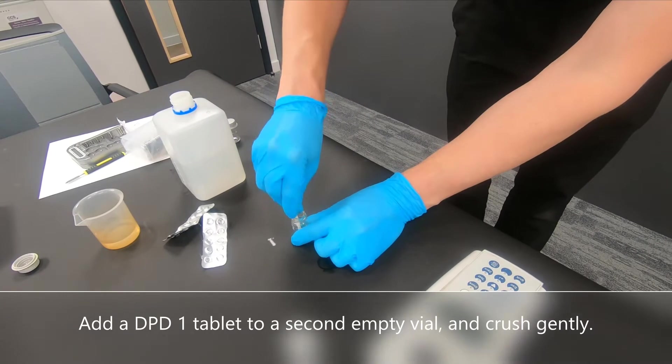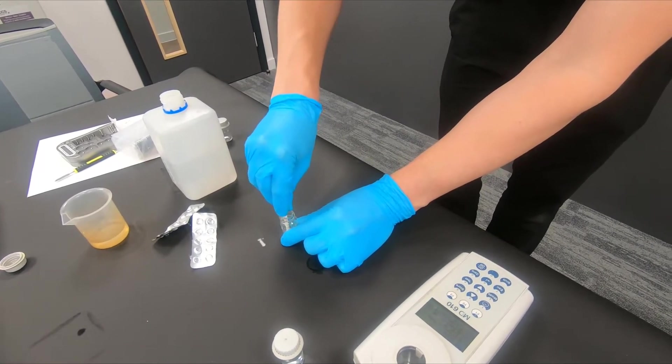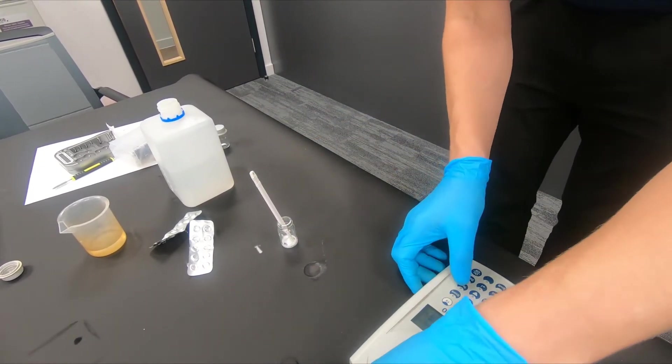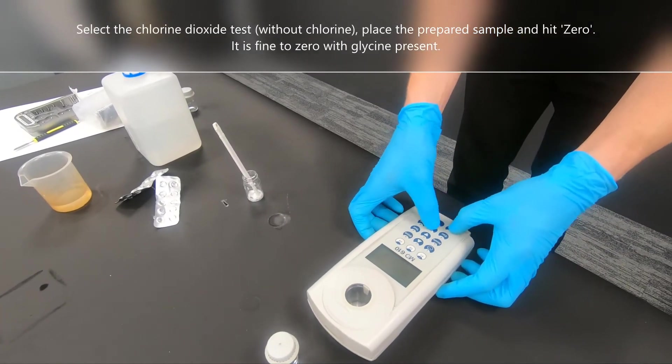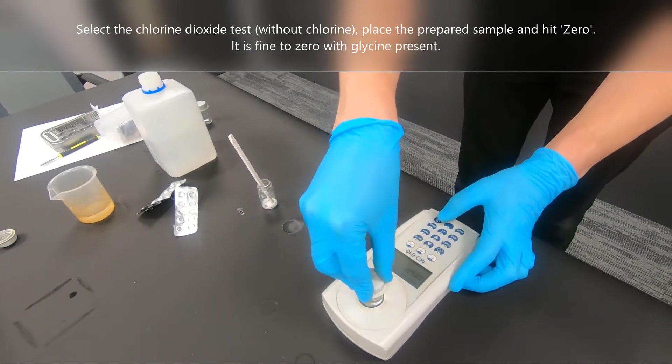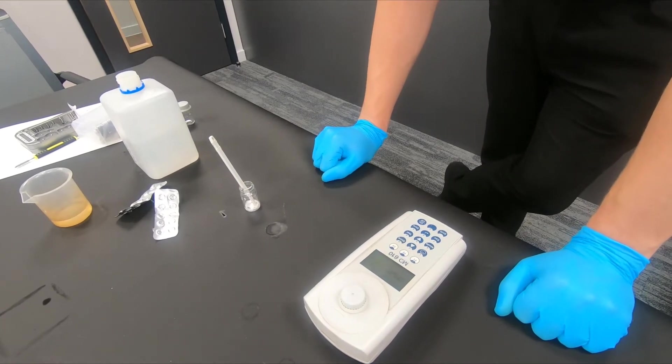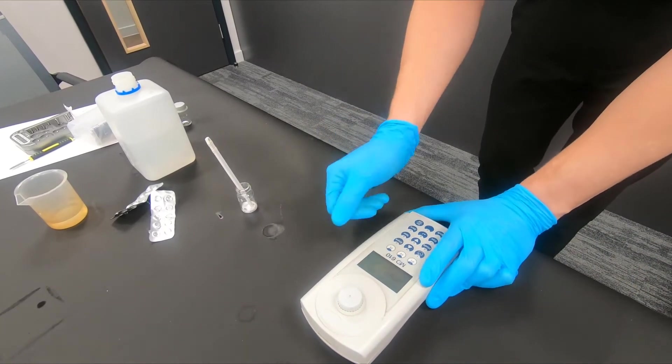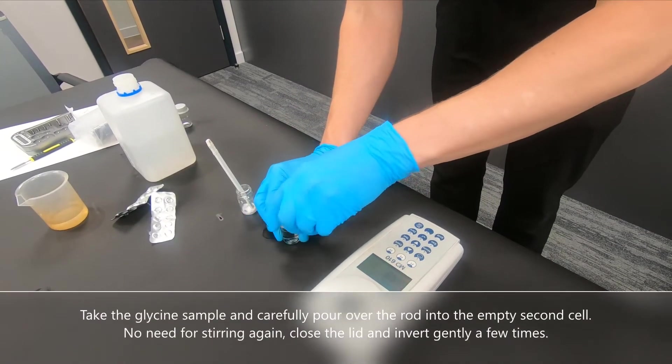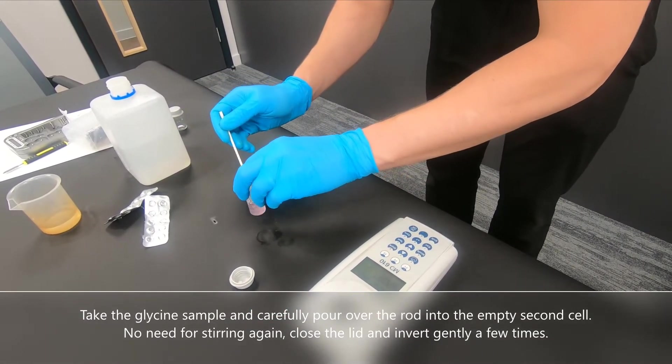Add a DPD-1 tablet in a second vial and crush. Take zero. That can be used with the glycine or without. Pour over.